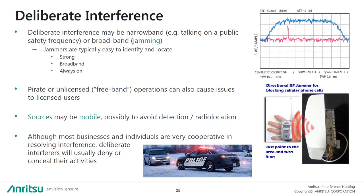Lastly, there is also deliberate interference, which can be both narrowband and broadband. Narrowband can, for instance, be talking on a public safety frequency. A very common example of broadband interference is the use of jammers. Jammers are normally very easy to identify and locate, since they are firstly very strong signals, secondly broadband, and thirdly always on. The trickiest part when it comes to deliberate interference is probably getting the culprits to admit to it and thereby resolving the problem.